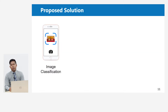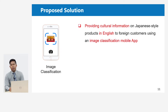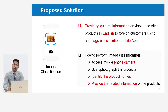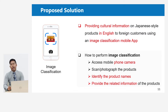As the proposed solution, I decided to use image classification for providing cultural information in English using an image classification mobile app. How to perform image classification? We will access the mobile phone camera and scan or photograph the product, identify the product name, then provide its cultural information in English.